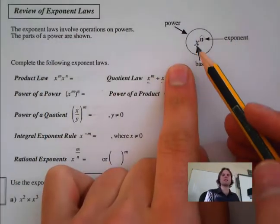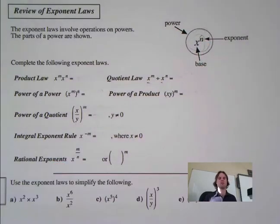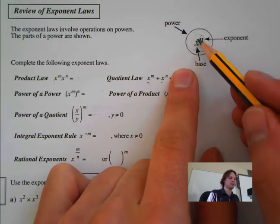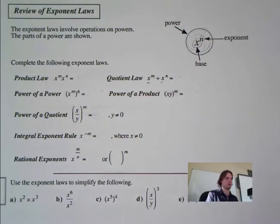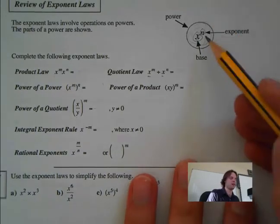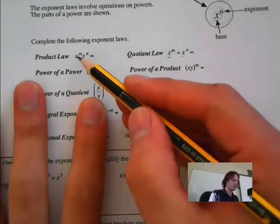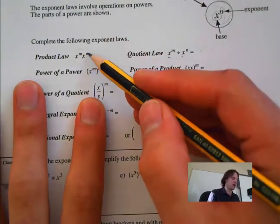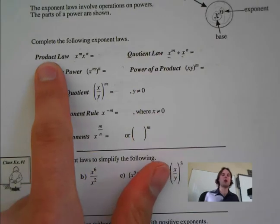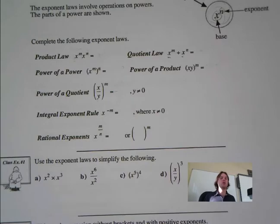Starting off, we're looking at some definitions. The power is everything — the base and the exponent together. The base is your big number; x is your base, n is your exponent. And the power is everything together. So x to the m and x to the n are both powers. Here we have a product of powers with the same base — that's the product law.